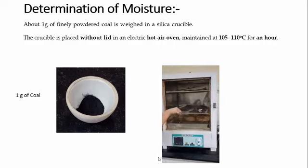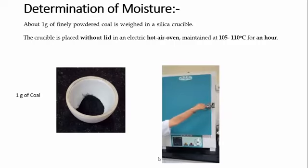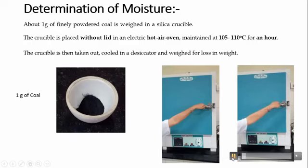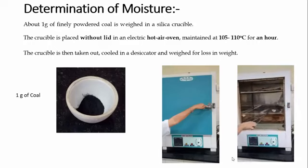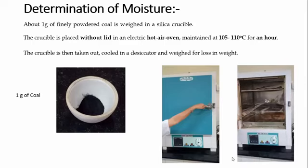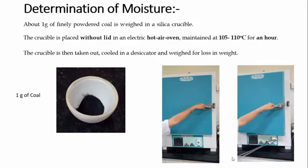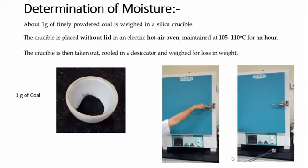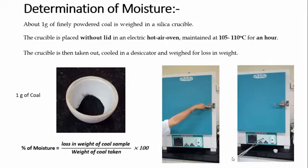As we know the boiling point of water is 100 degrees Celsius, so at 110 degrees Celsius all the moisture is lost from the fuel. After 1 hour, the crucible is taken out from the oven and kept in the open air for cooling. Once cooling is done, it is kept in the desiccator. The desiccator consists of anhydrous calcium chloride, which absorbs any moisture absorbed during cooling. The loss in weight is calculated by the formula: loss in weight of coal sample upon weight of coal taken, into 100.